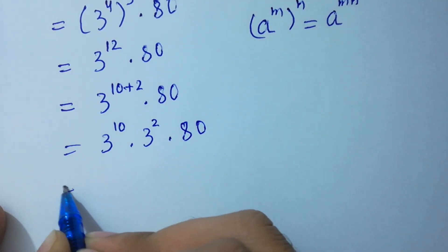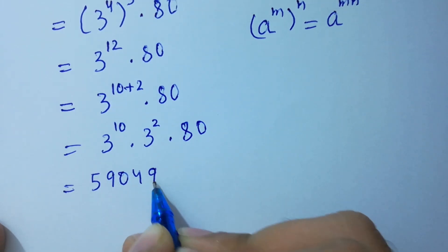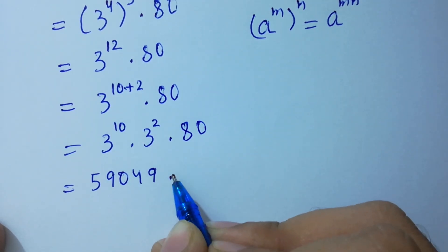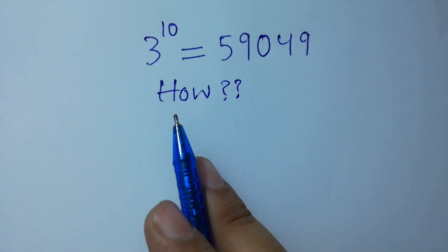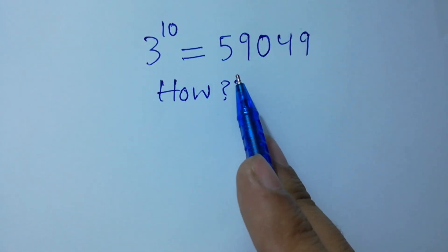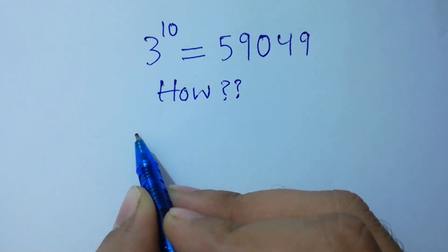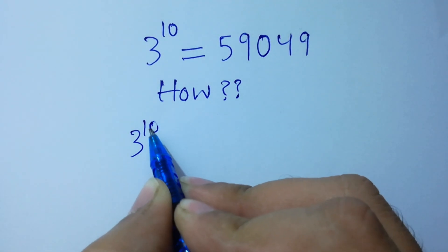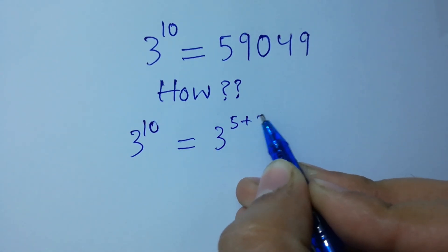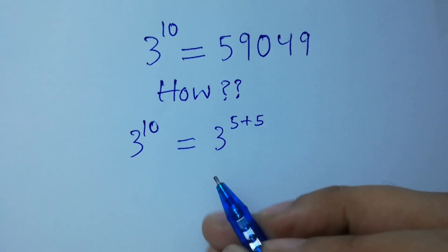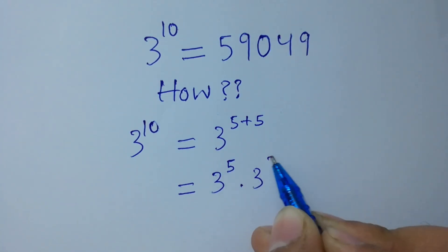Now, 3¹⁰ = 3^(5+5) = 3⁵ × 3⁵. Let's calculate 3⁵: 3 × 3 = 9, 9 × 3 = 27, 27 × 3 = 81, 81 × 3 = 243. So 3⁵ = 243, and similarly the other 3⁵ = 243.